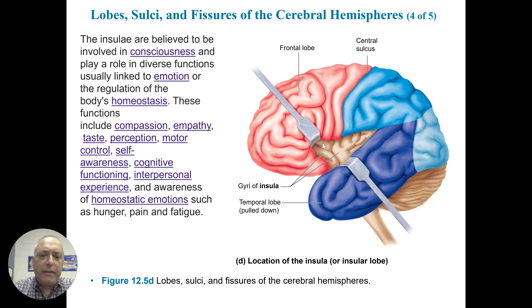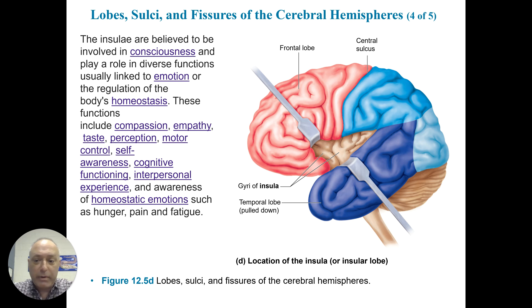If you dissect away the frontal lobe, underneath it is the insula. The insula is believed to be involved in consciousness and plays a diverse role in emotions and the regulation of homeostasis. These functions include compassion, empathy, taste, perception, motor control, self-awareness, cognitive function, interpersonal experience, and awareness of homeostatic emotions such as hunger, pain, and fatigue. So these are the insula, or insular lobe, deep to the frontal lobe.